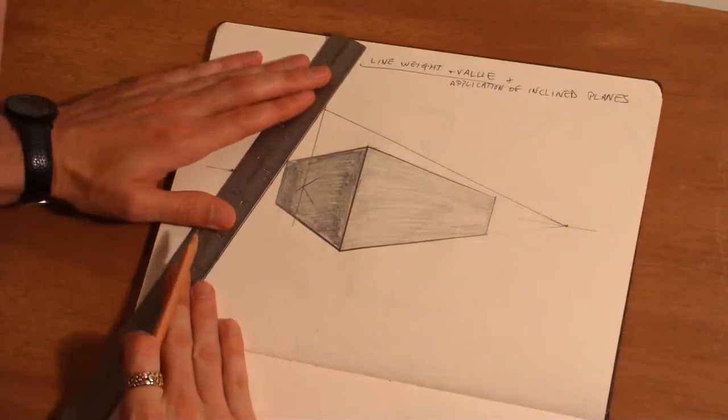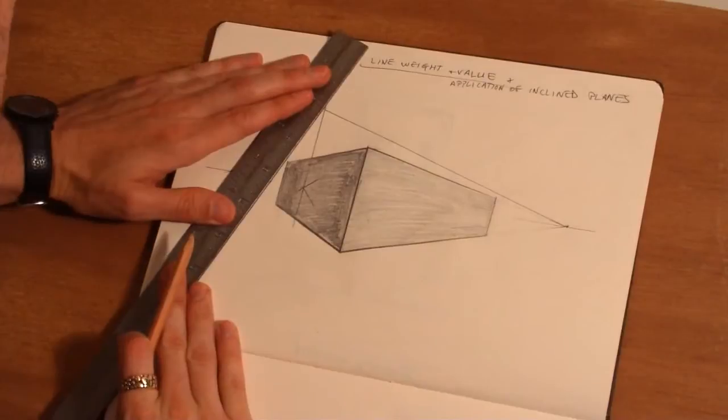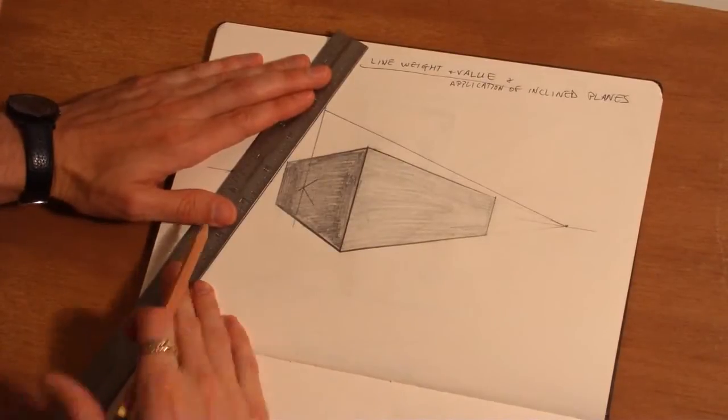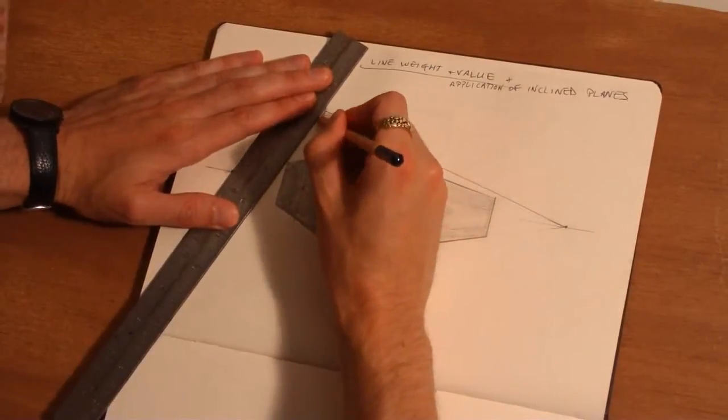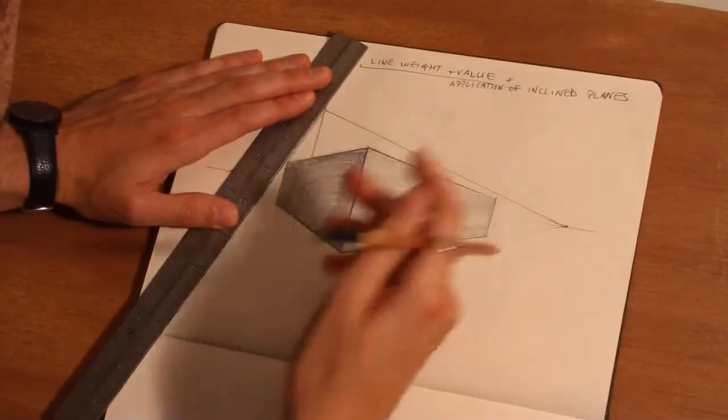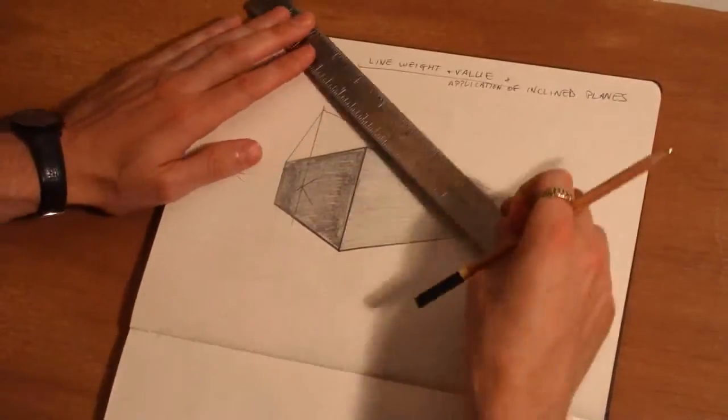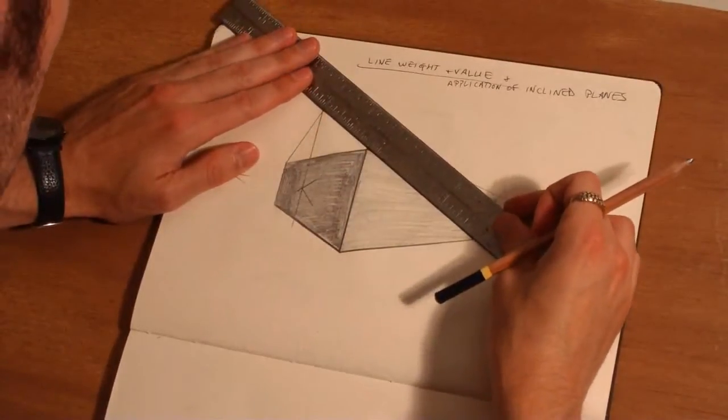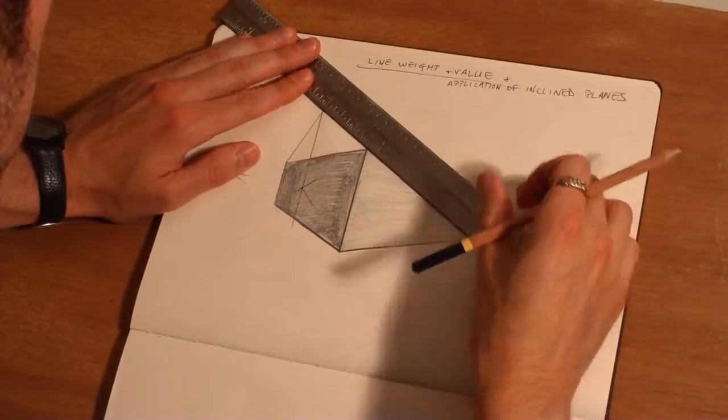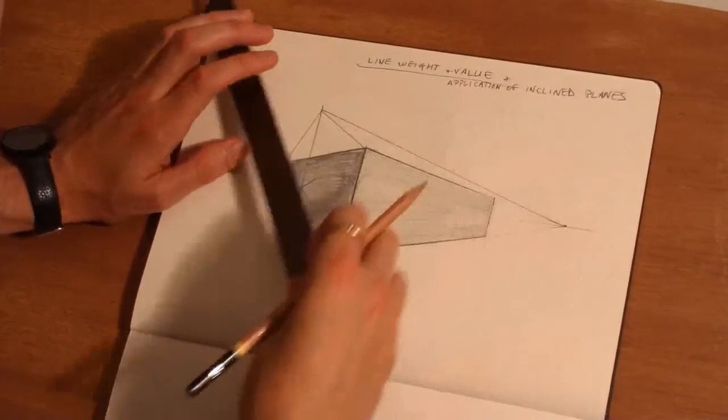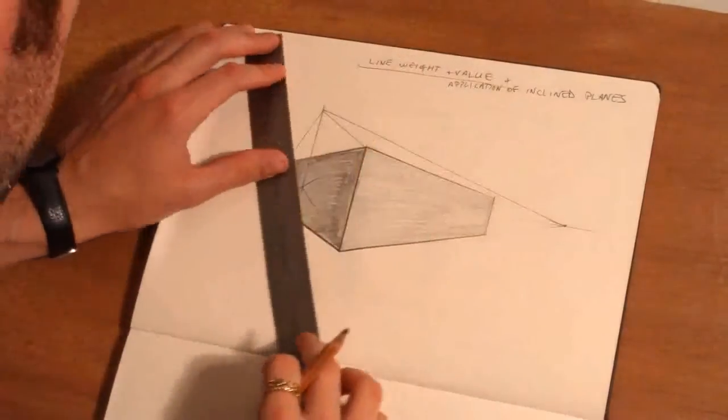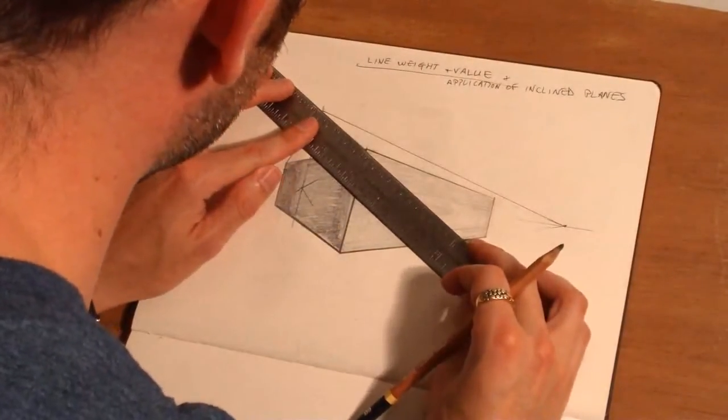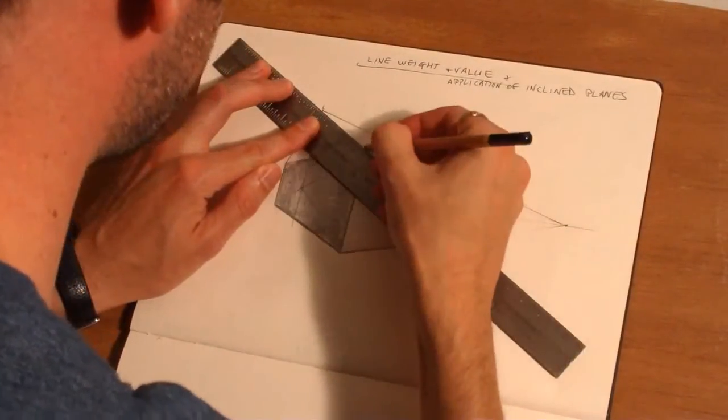So what we're going to do is give this an A-frame style roof onto the solid by drawing from the corners up to our peak. Kind of missed that a little bit. Pencil is a little dull.